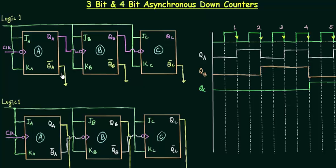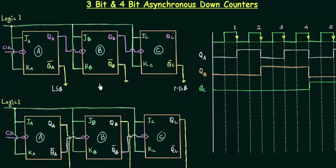The first circuit has a change in the output. Instead of taking QA, QB, and QC as the output like we did for up counters, we have taken QA complement, QB complement, and QC complement as the output. QA complement is the LSB (least significant bit) and QC complement is the MSB (most significant bit). With this arrangement you have a counter that will count from 7 to 0.